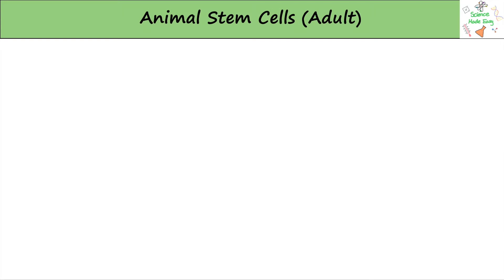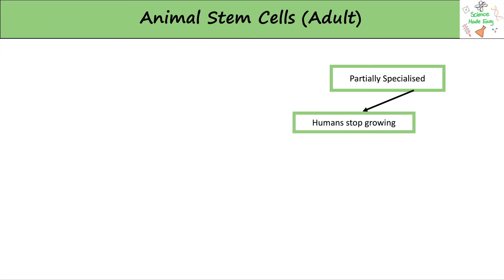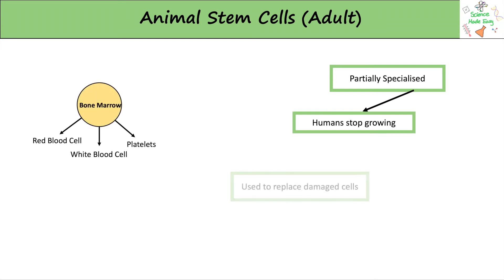When the baby grows it will still have stem cells, however these are only partially specialised. This is because humans stop growing — animals don't need to regrow their cells, only replace the damaged ones. This means that adult stem cells can only differentiate into a select set of cells. For example, stem cells found in the bone marrow can only differentiate into types of blood cells.